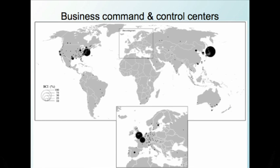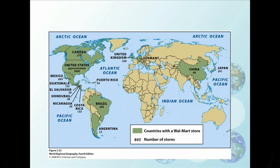This map gives an example of business command and control centers throughout the world, and you can see that the majority of them line up with core peripheral regions — the United States, Europe, and Japan. Another good example of the spread of corporations is this map showing countries with a Walmart store. As of 2008 there were 845 stores across all the countries shown — and that's just the presence of stores, not counting the production and distribution that goes into what's inside those Walmart stores.